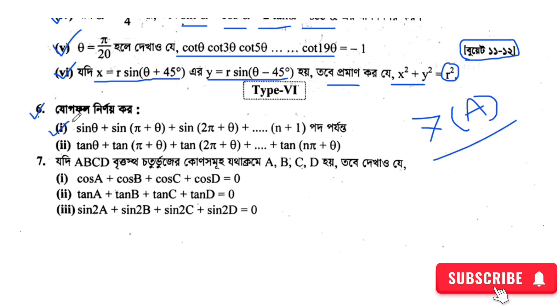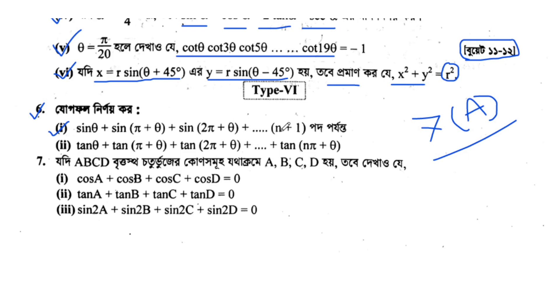We have a problem about sin(a) plus sin(π + θ), sin(2π + θ). We have n plus 1.20.